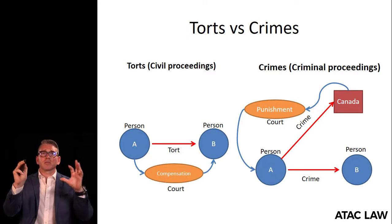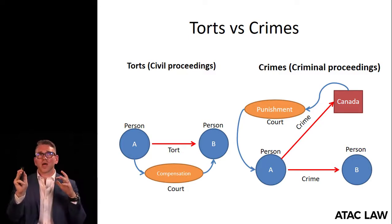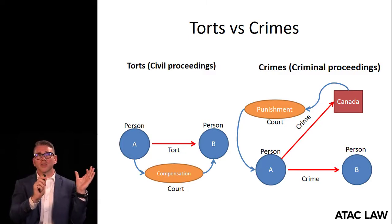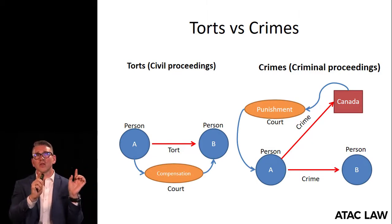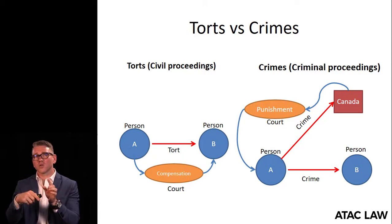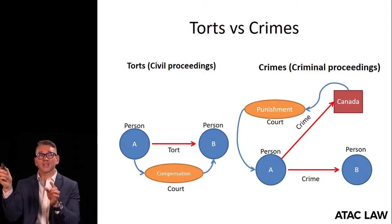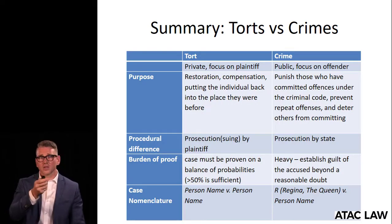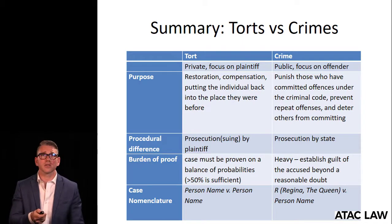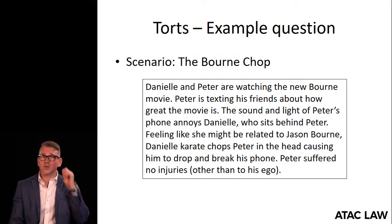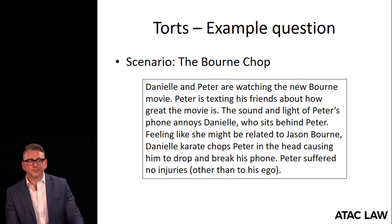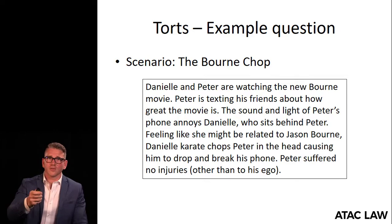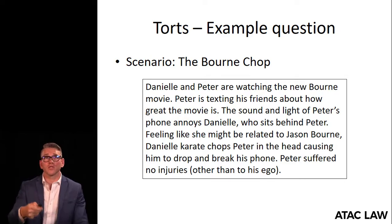This diagram illustrates the difference between torts and crimes. In the case of a tort, the money flows directly from person to person. Whereas in the case of a crime, the money typically flows from the person to the state because it's the state doing the punishing. I've listed all the details and differences between torts and crimes on the slide for your reference later. But rather than go through that, let's get to an example question.